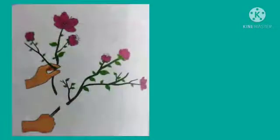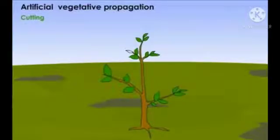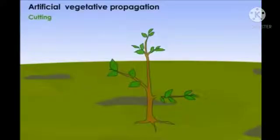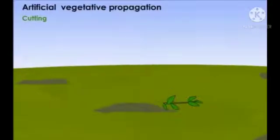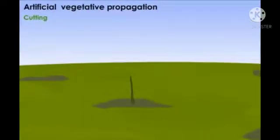Our next method of artificial vegetative propagation is cutting. For cutting, we have to select a healthy young branch with a few nodes and internodes. Then cut off the branch and remove most of its leaves. Now the cut end is stuck into some good moist soil.